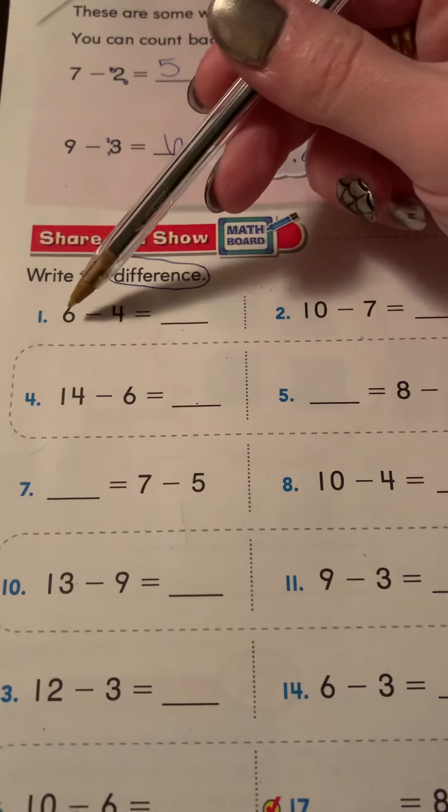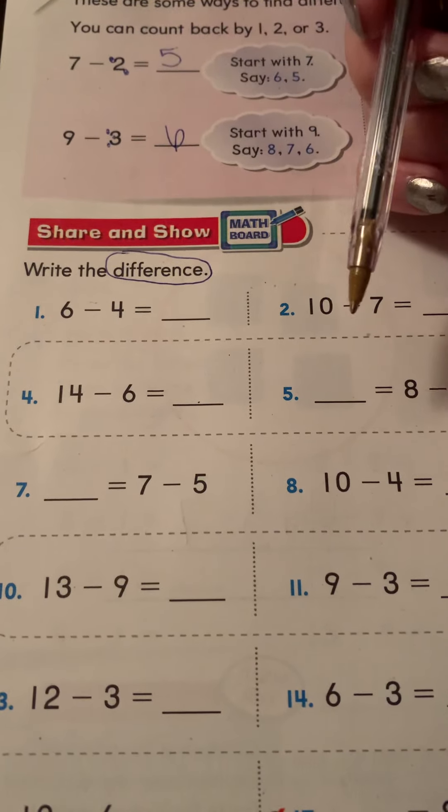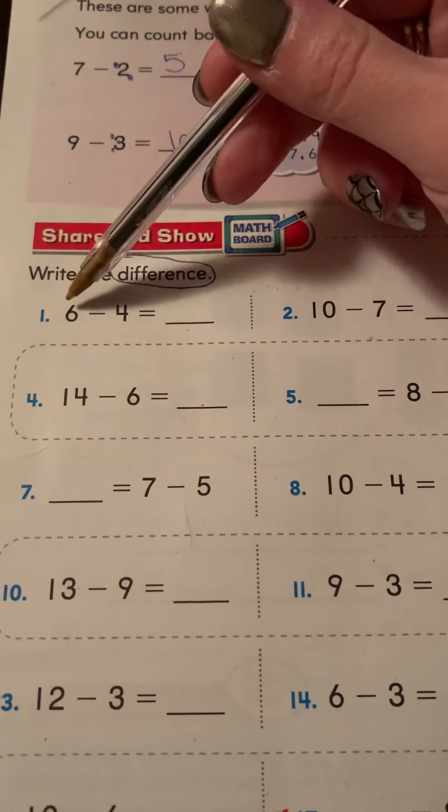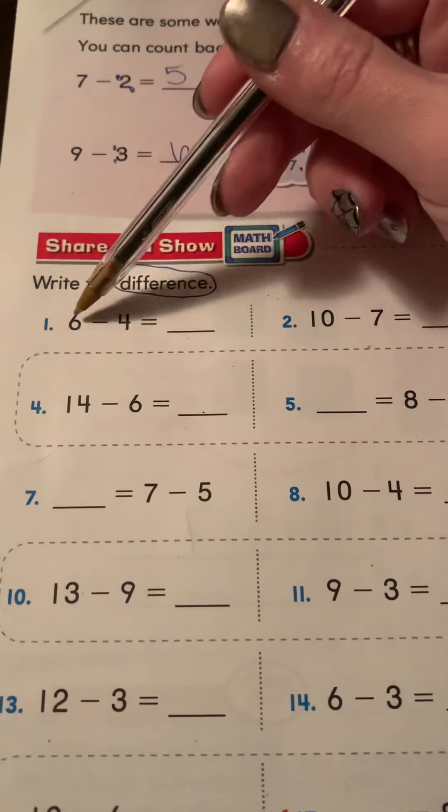They're finding out the difference because guess what? Six and four, they're not the same. They're different. But how many more would it take for four to be just like six? That's what they're asking you. How much different are they?